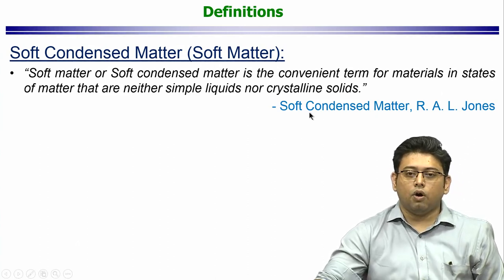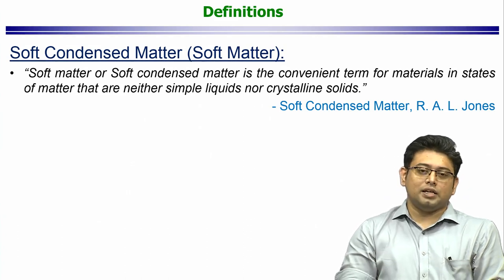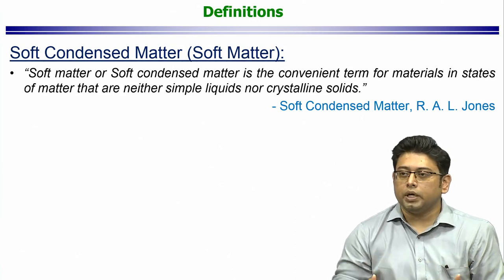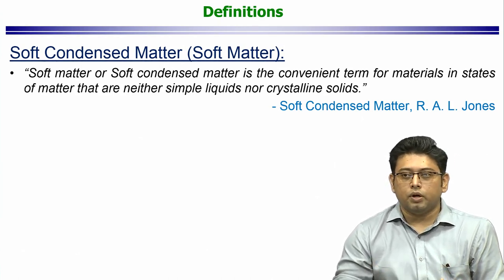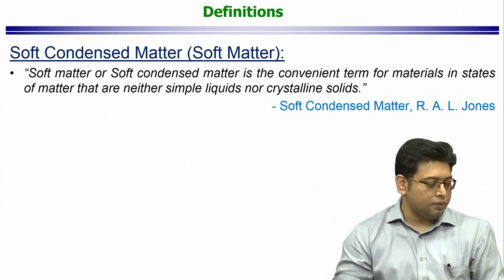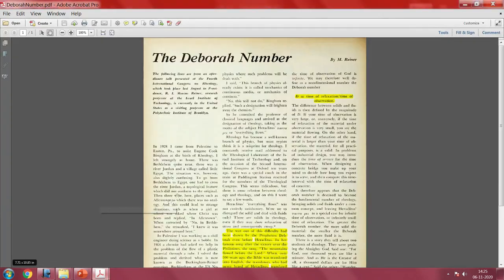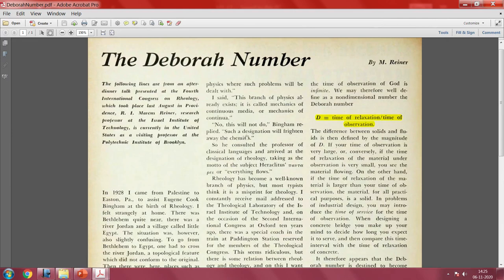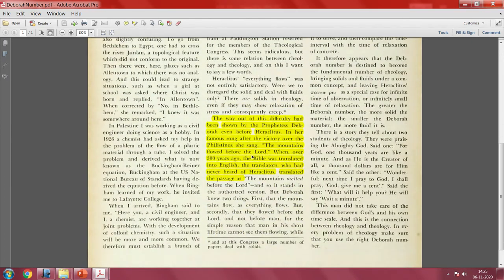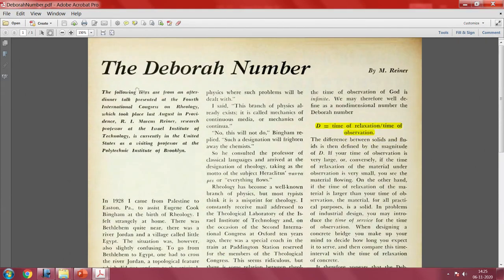The pitch drop experiment sets the context for the idea that the observer is important — not necessarily a human being, but whether you are doing a numerical simulation, an experiment in the lab, or anything else, there is a time of observation naturally associated with it. To make this idea more formal, let us go back to one more very classical paper. This paper is titled 'The Deborah Number,' and it is just a one-page paper published in 1964 in Physics Today, which is easily available on scientific websites.